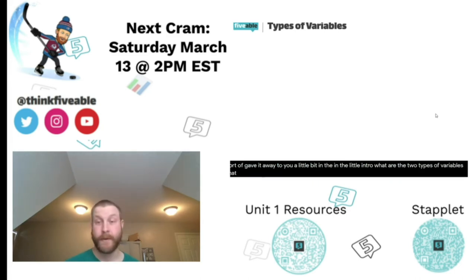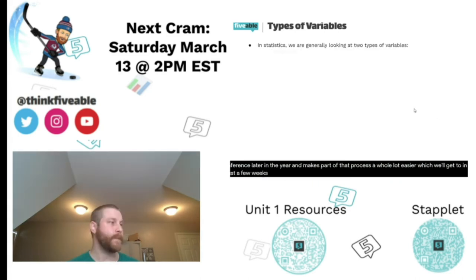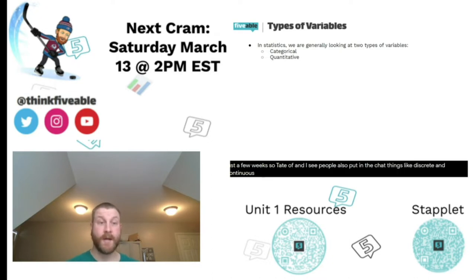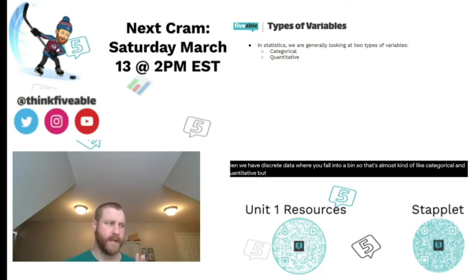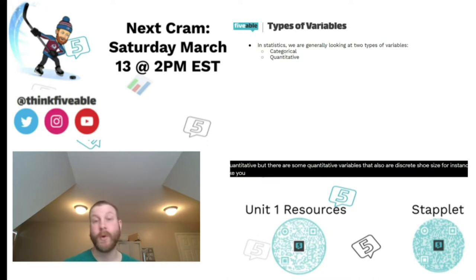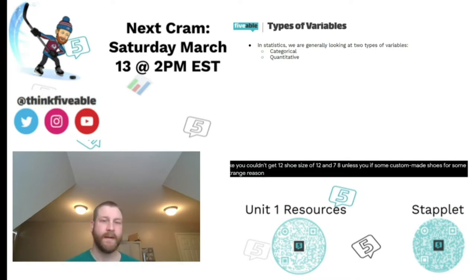There are two types of variables we typically look at in statistics: categorical and quantitative. We also have continuous data — things that fall on a normal curve — and discrete data where you fall into a bin. That's somewhat like categorical vs. quantitative, but some quantitative variables are also discrete. Shoe size, for instance — you couldn't get a size of 12 and 7/8, but it is quantitative because you could take the average shoe size.